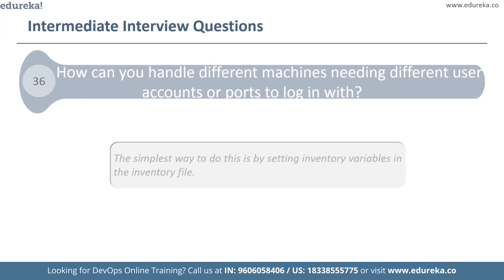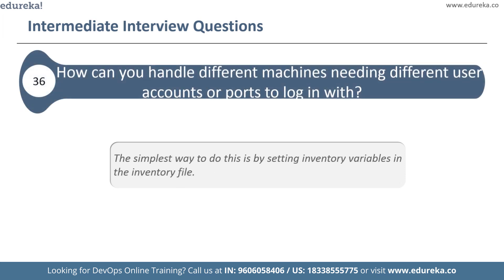The next question is: how can you handle different machines needing different user accounts or ports to log in with? The simplest way is to set inventory variables in the inventory file. These hosts can have different usernames and ports specified. If you wish, you can also specify the connection type, and to manage this even better, keep these settings in group variables.